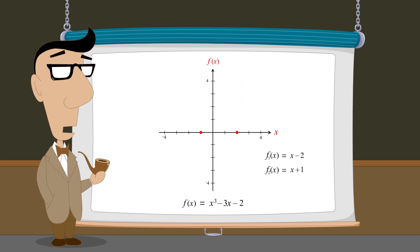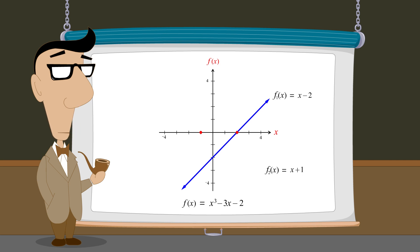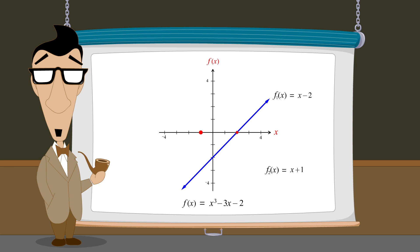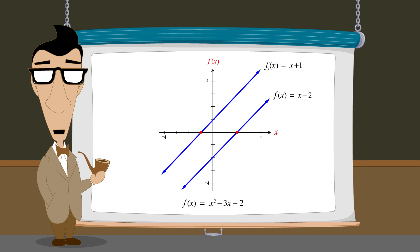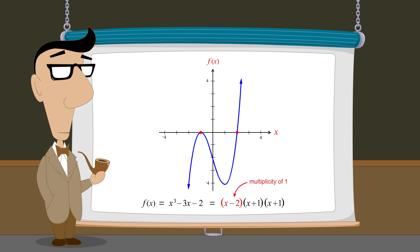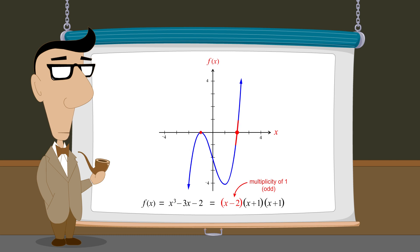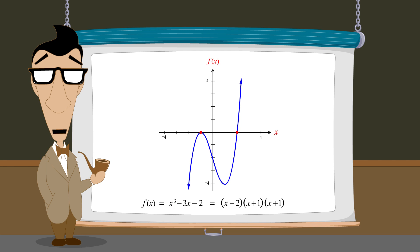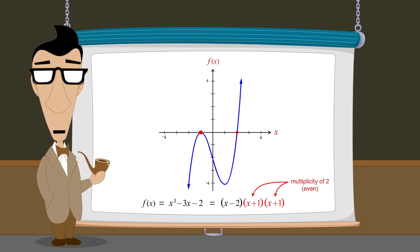For example, this polynomial function's zero at an x-value of 2 is identical to the zero of the function x minus 2. Likewise, the polynomial function's zero at negative 1 is identical to the zero of the function x plus 1. We also showed that the number of times a factor is repeated, called its multiplicity, determines how a polynomial function's graph behaves at the zero associated with that factor. If the factor's multiplicity is odd, the graph will cross the x-axis at that intercept, having opposite signs on either side. If the multiplicity is even, the graph will touch the x-axis without crossing it, having the same sign on either side.